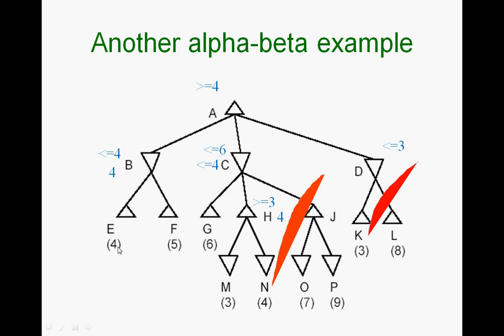A will make this move because it thinks it can get at least a 4 from this direction. That's your alpha-beta pruning.